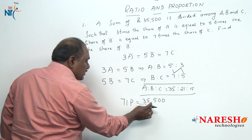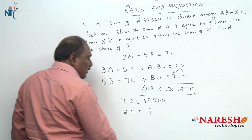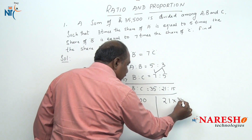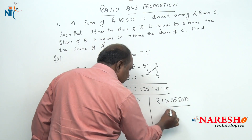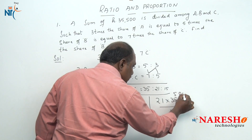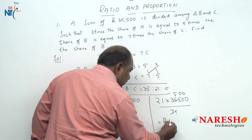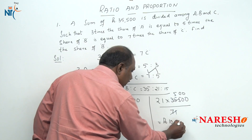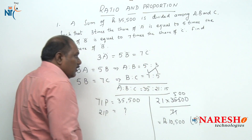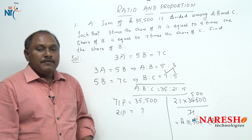If 71 parts is 35,500, how much is 21 parts? Cross multiply: 21 into 35,500 divided by 71. 71 times 5 is 355, so this would be the share of B. So B is going to get 10,500 in a sum of 35,500.